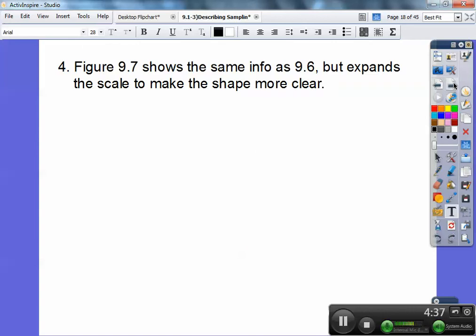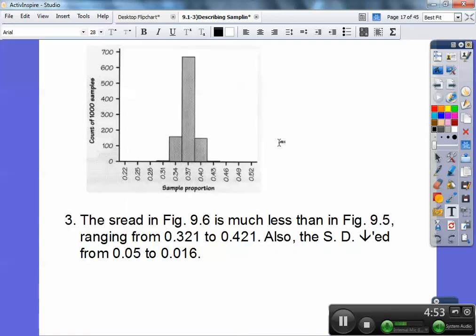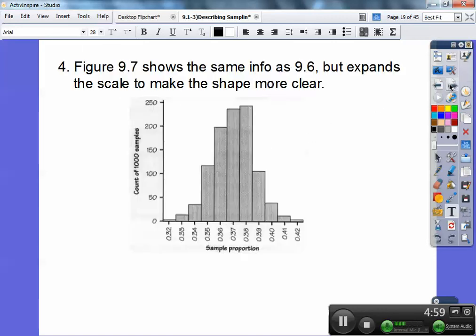Figure 9.7 shows the same information as the one we were just looking at, but it expands the scale so it makes it look more clear. So there's the scale expanded. We didn't have that tall skyscraper. They went from three percentage jumps from 37% to 40%, and these guys are only going by one percentage each jump. So it spread them out a little bit and took out that skyscraper.